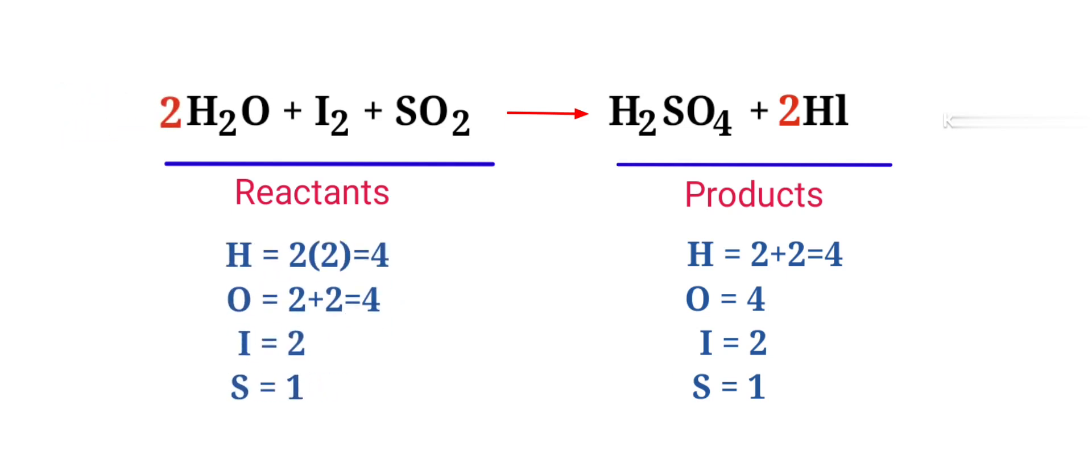The equation is now balanced. There are 4 hydrogen atoms, 4 oxygen atoms, 2 iodine atoms and 1 sulfur atom on both sides.